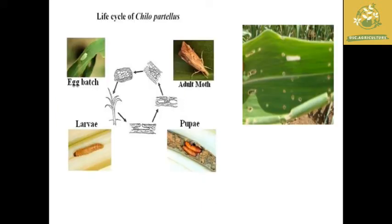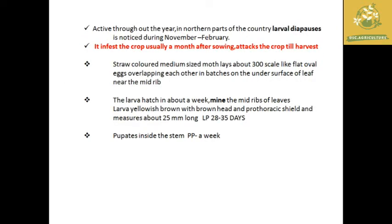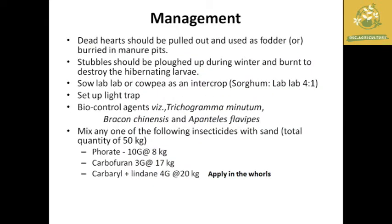I have also given the biology and life cycle of Chilo partellus. These stem borers are present throughout the year in the northern part of the country, but are mainly found during November to February. They infest the crop from after sowing until harvest, making them one of the serious pests in sorghum. Pupation occurs within a week.